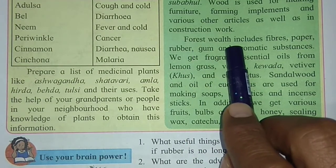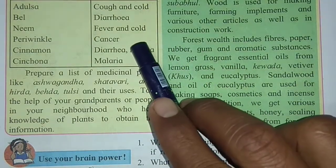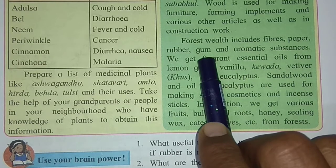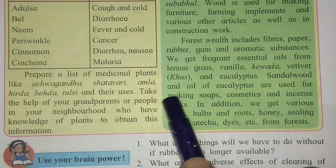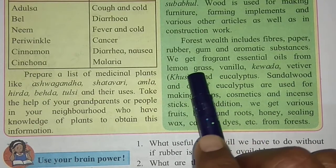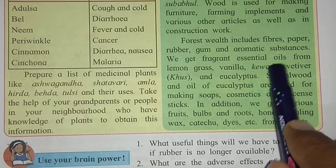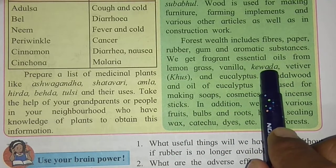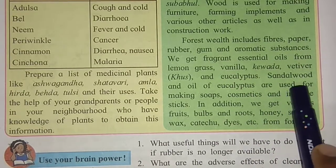Let us add more about forest wealth — the produce we get from forests. In addition to medicinal plants and wood, from forest we obtain fibers, paper, rubber, gum, and aromatic substances. We also get fragrant essential oils from lemongrass, vanilla, kevda, vetiver (khus), and eucalyptus. These give us fragrant oils — like eucalyptus oil, which you must have heard of. Kevda is used in the scent of incense sticks.